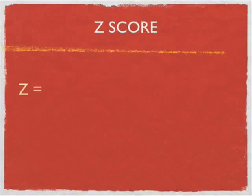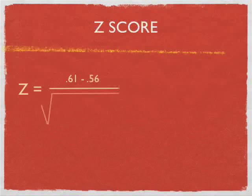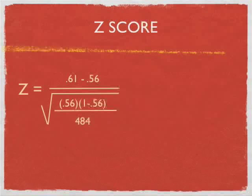So, the z-score is plug and chug. 0.61, which is our sample proportion. We went on a sample of 484 people. That's what we got. 0.56 is our null hypothesis. Divided by the square root of 0.56 times 1 minus 0.56 divided by 484.